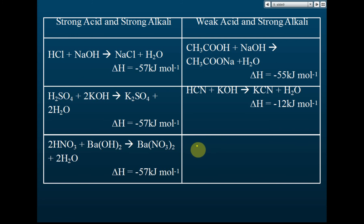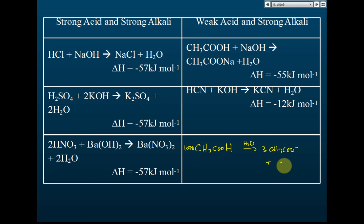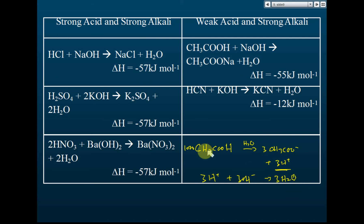Students think that for weak acid like ethanoic acid, which only partially ionizes — say if we have 1000 ethanoic acid molecules, only three of them ionize to form three ethanoate ions and three hydrogen ions. Since there are only three hydrogen ions, they react with three hydroxide ions to produce three water molecules. Students conclude that the heat released is lower because only three water molecules are produced. But this thinking is not correct.